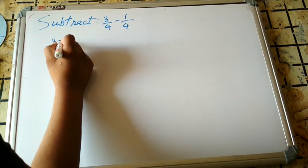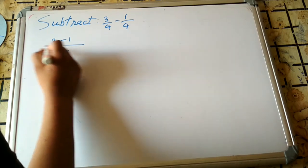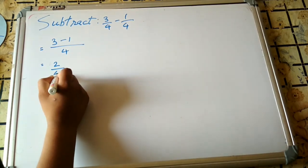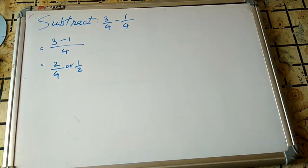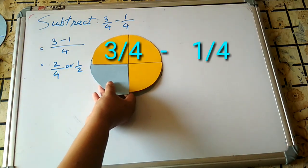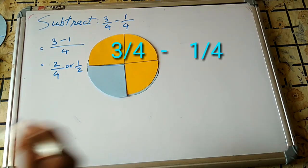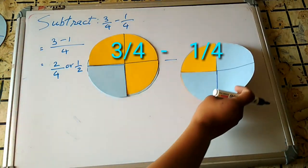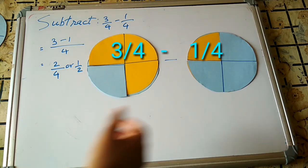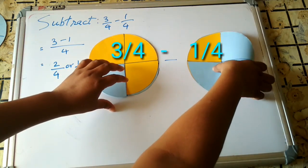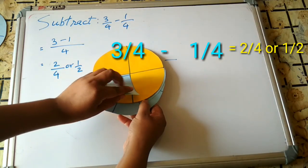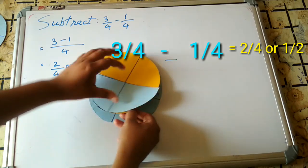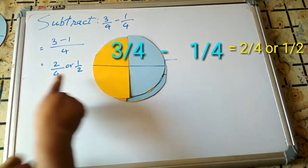Now subtraction: 3/4 − 1/4. Since these are like fractions, we directly subtract: 3 − 1 upon 4 equals 2/4, or 1/2. In the activity, we have a circle showing 3/4. From that we subtract 1/4, so 3 − 1 equals 2, and we get the answer 2/4, or 1/2.